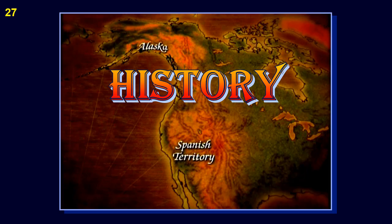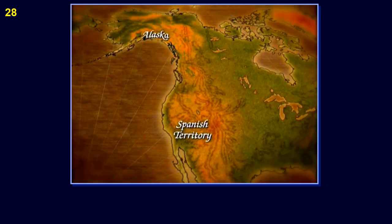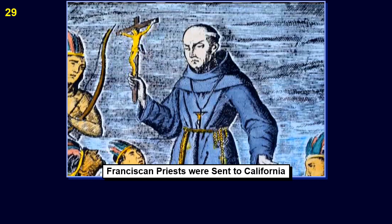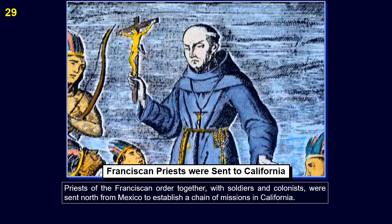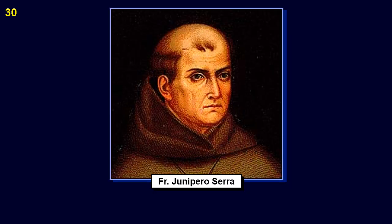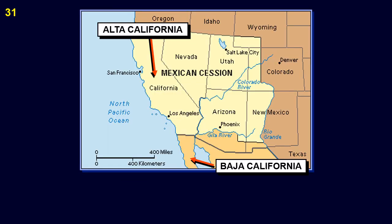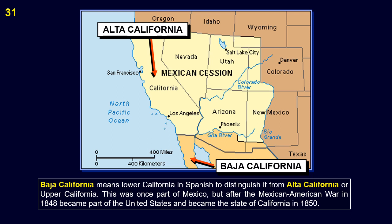A very brief history of California. Spain had laid claim to the entire Pacific coast. Priests of the Franciscan Order, together with soldiers and colonists, were sent north from Mexico to establish a chain of missions in California. The priests of the Franciscan Order were led by Father Junipero Serra. Baja California means Lower California in Spanish, to distinguish it from Alta California or Upper California. This was once part of Mexico but after the Mexican-American War in 1848 became part of the United States and became the state of California in 1850.